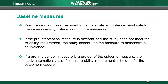Recall that in Module 3, Baseline Equivalence, we discussed how the WWC uses pre-intervention or baseline measures to assess equivalence of the intervention and comparison groups. The WWC also applies the reliability criteria for outcome measures to these baseline measures used to demonstrate equivalence. Pre-intervention measures used to demonstrate equivalence must satisfy the same reliability criteria as outcome measures.